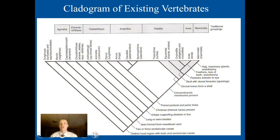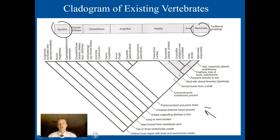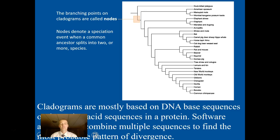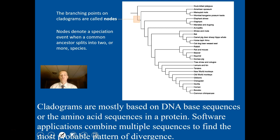Cladograms can be big or small. This is the cladogram we now have for vertebrates — creatures from jawless fish all the way up to mammals — showing how they're related using all the characteristics used to build it. Cladograms are mostly based on DNA sequences today, and also on amino acid sequences found in proteins. We have software applications, similar to what you used in the virus activity early on, that align sequences of DNA from multiple species and build a tree showing their relationships.